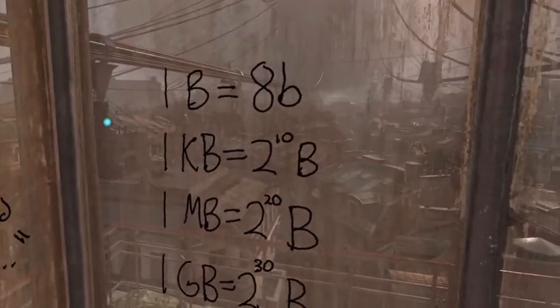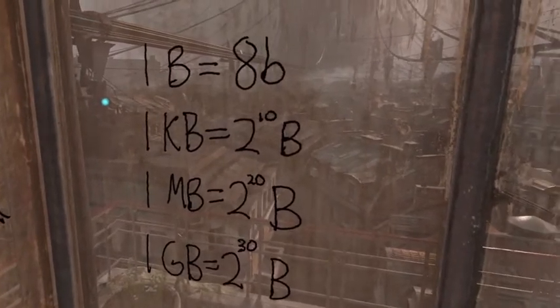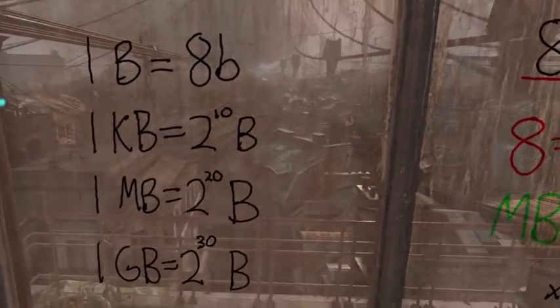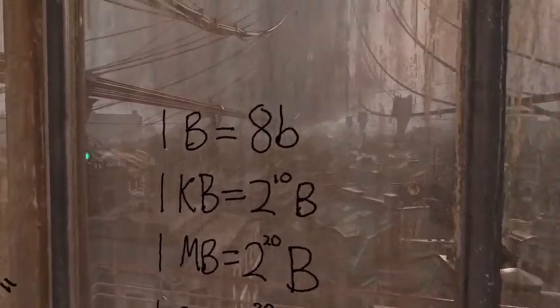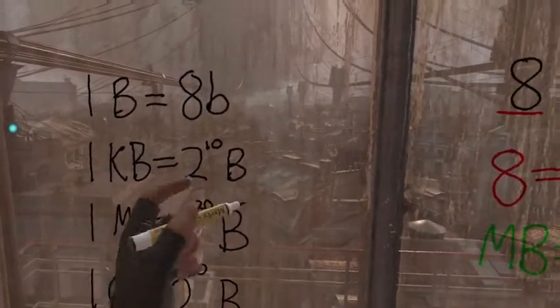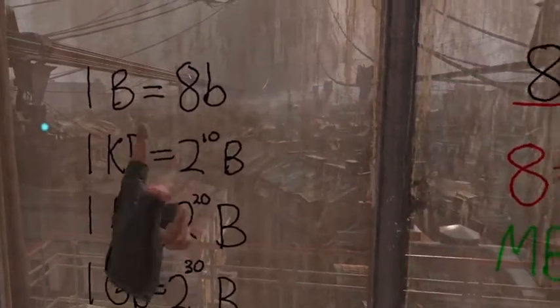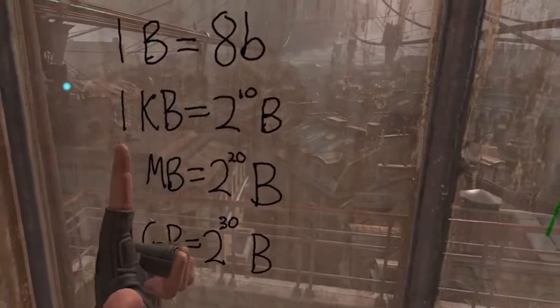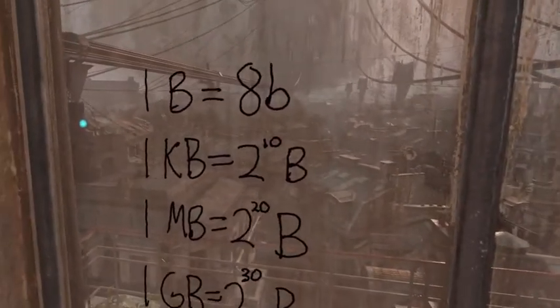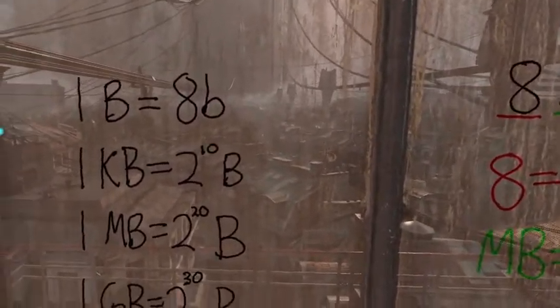Now, you'll notice that all three of these units we use here are powers of 2. And their exponents are incremented by 10. We go from 2 to the 10, to 2 to the 20, to 2 to the 30. And this makes it very easy to remember.